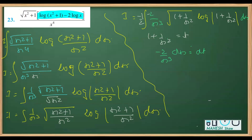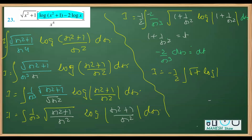Coming back to the main working: this is −1/2 times the integration. The expression inside the root is replaced with t, and dx is replaced with dt. So we are left with √t times log mod t. And √t is the same as t raised to the power 1/2.